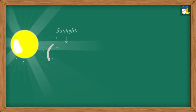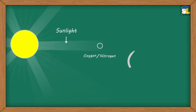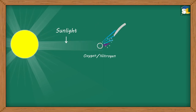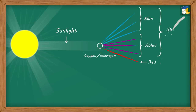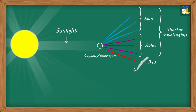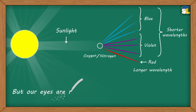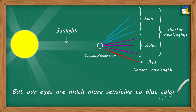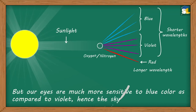However, when the sunlight strikes particles of oxygen and nitrogen, which are smaller than the wavelength of sunlight, the colors of sunlight having shorter wavelengths — that is, blue and violet — are much more scattered than colors having longer wavelengths. But our eyes are much more sensitive to blue color as compared to violet. Hence, the sky appears blue to us.